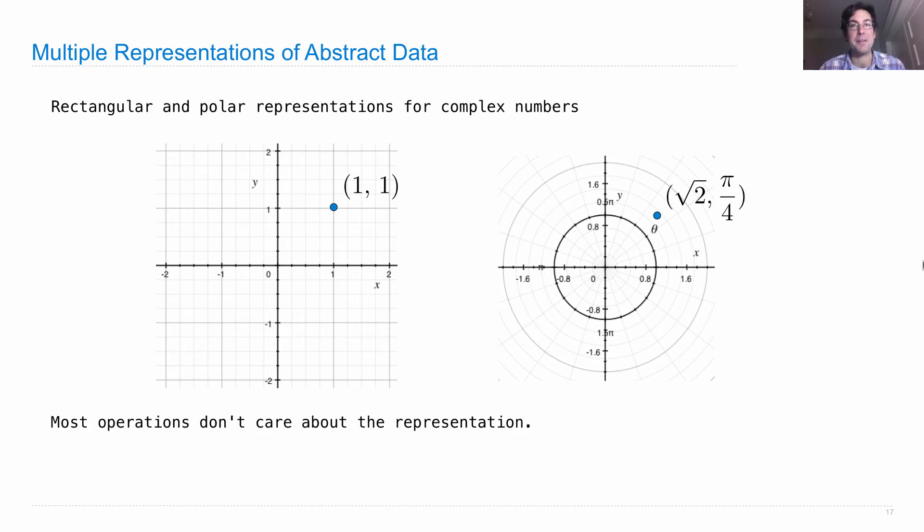Most operations don't care about the representation. If you're going to pass these things around, just store them, then we treat complex numbers as a whole, and it doesn't matter which representation we're using.